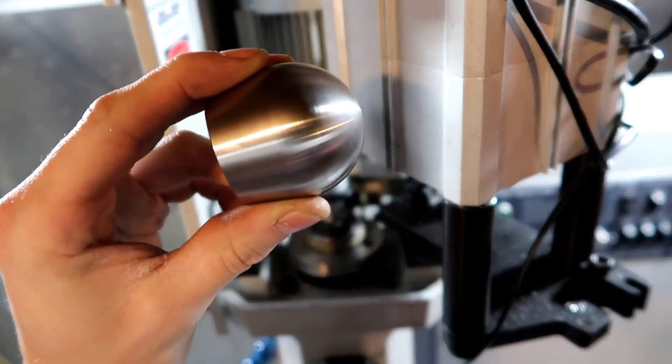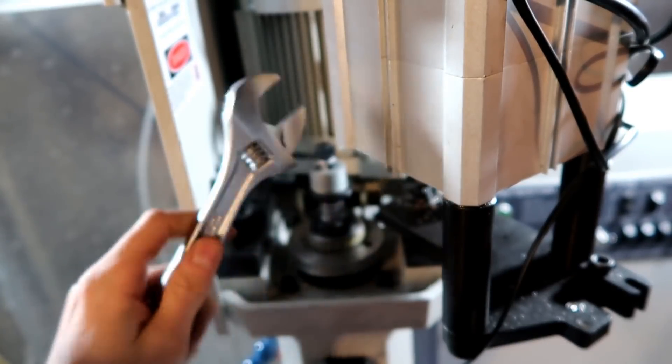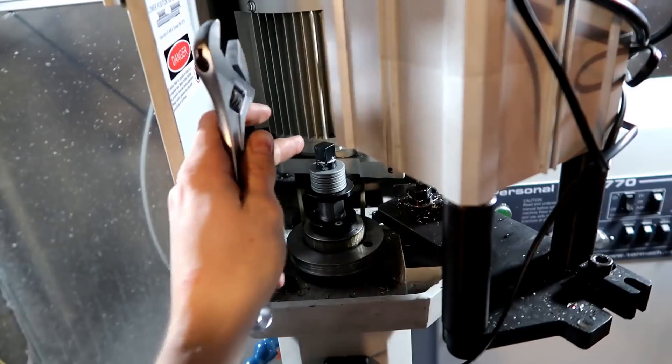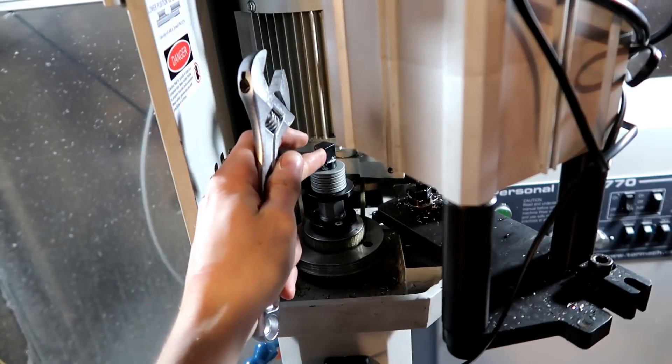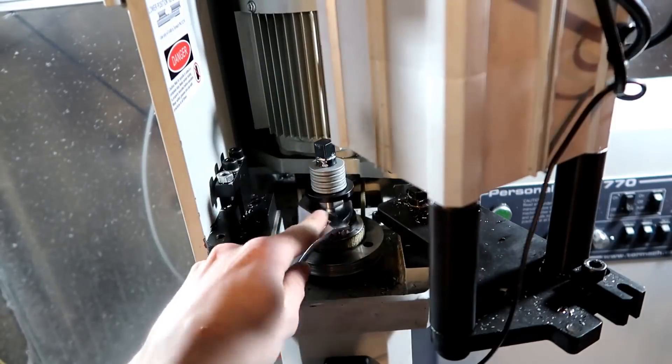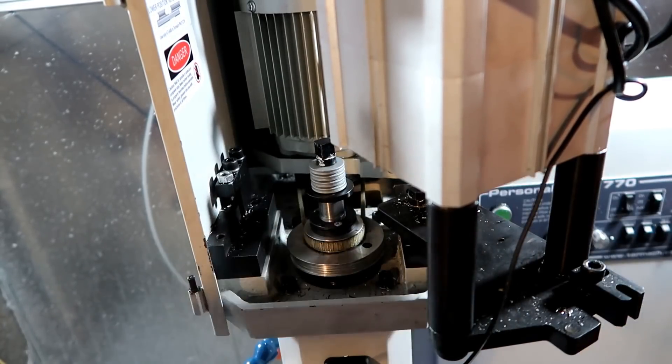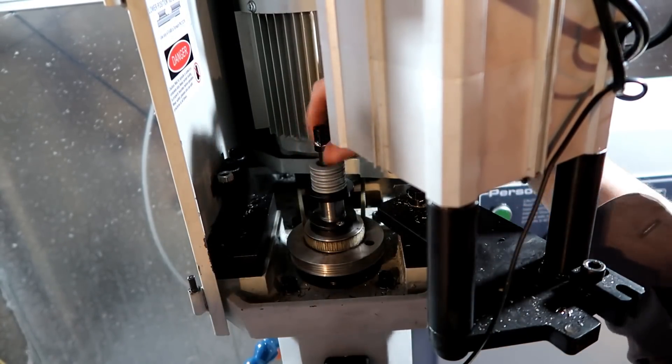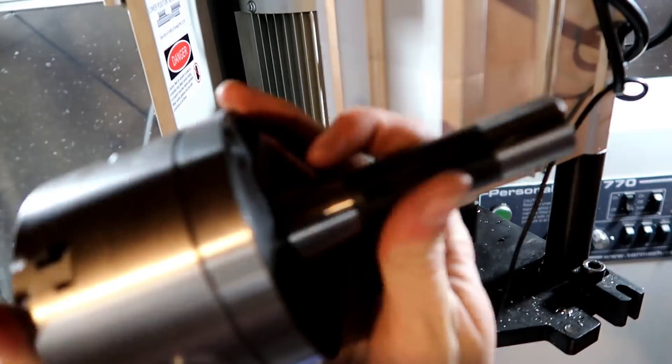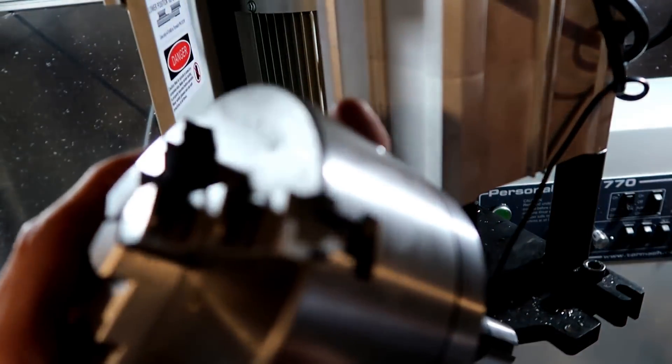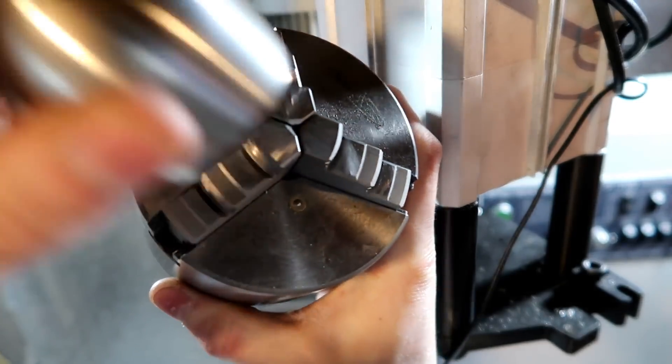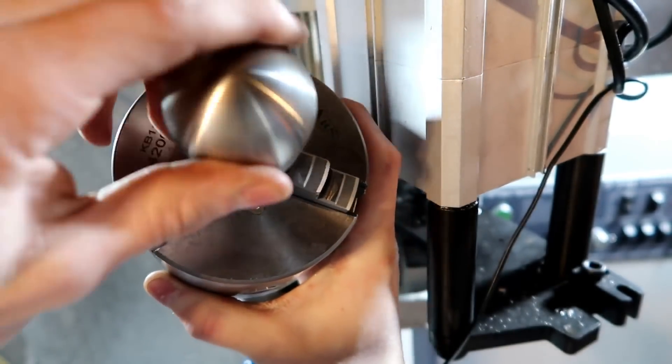To use this knurling tool, I need to put the three-jaw chuck in. In order to do that, I take this drawbar loose to remove the R8 collet. Next up is the three-jaw chuck, and I'm going to put the part in the chuck like this with this hole in here.